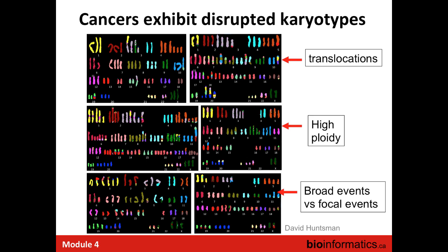A whole genome duplication event is exactly what it sounds like: at some point, mitosis failed in a way, and instead of evenly dividing chromosomes to two daughter cells, all the chromosomes went to one daughter cell. Genome duplication events are a fairly prevalent feature in cancer and one of the ways in which the building blocks of these chaotic genomes are made available. Lastly, we mostly see broad events here—events involving whole chromosome arms or whole chromosomes—but there are plenty of focal events detectable with finer resolution methods.